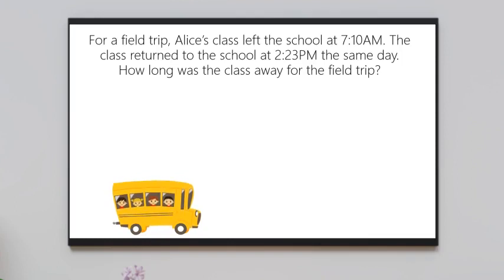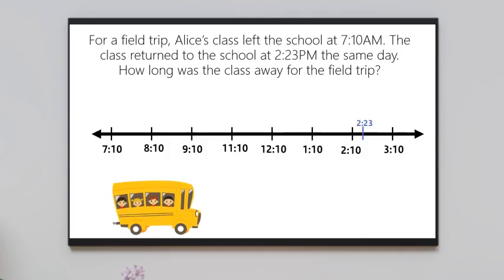So I'm starting at 7:10 and I want to get to 2:23. So let's start at 7:10 and jump an hour at a time. 7:10 to 8:10 would be one hour. Then 2, 3, 4, 5, 6 hours.